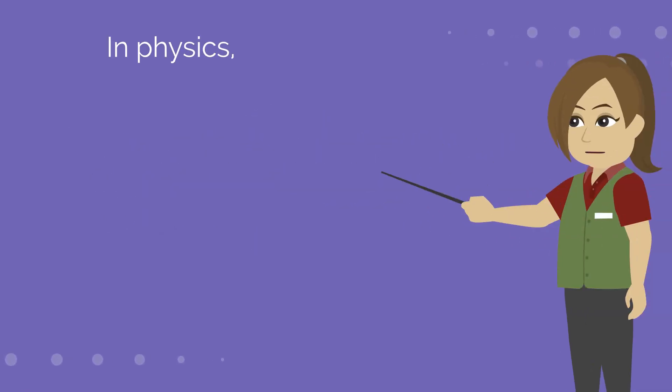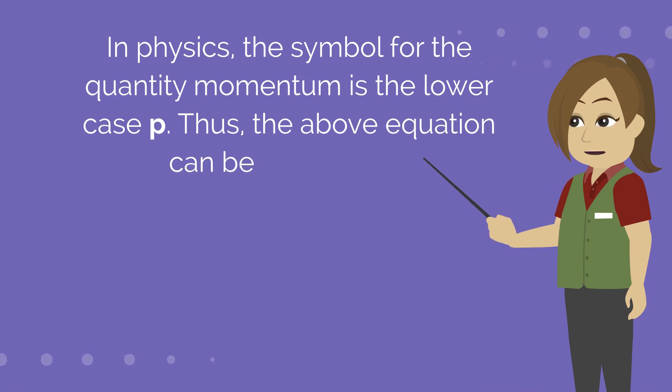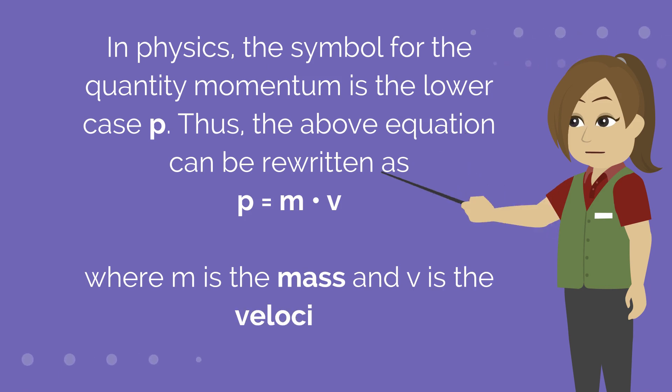In physics, the symbol for the quantity momentum is the lower case p. Thus, the above equation can be rewritten as p equals m into v, where m is the mass and v is the velocity.